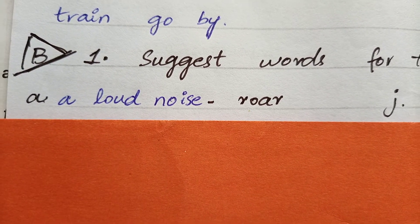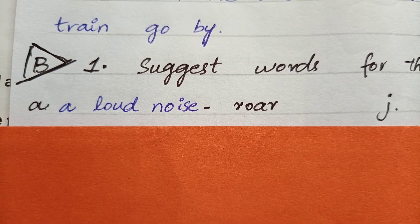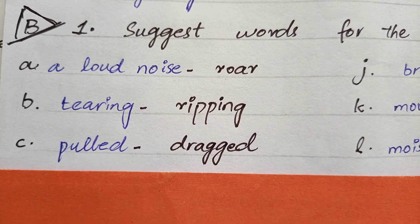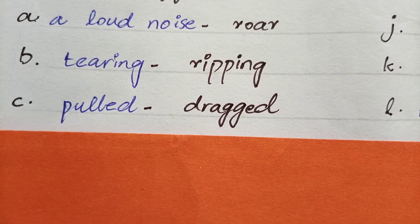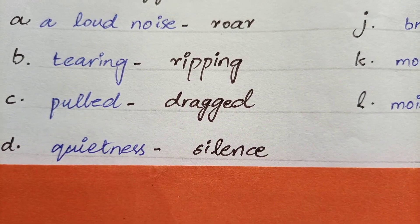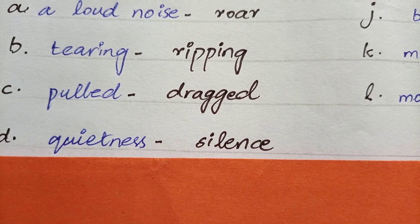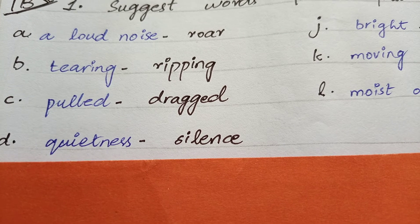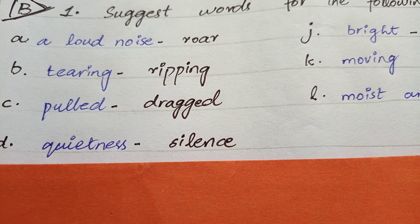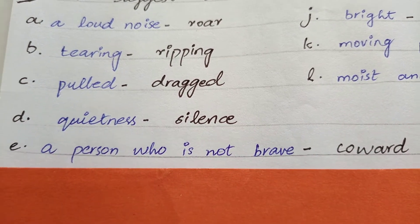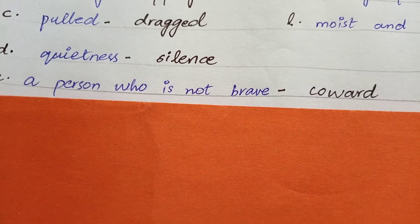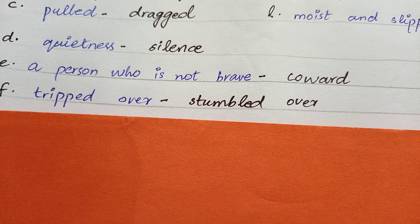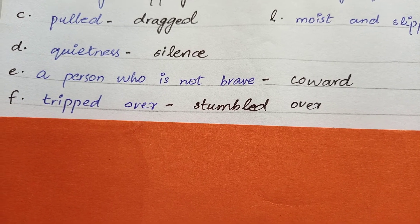The word for 'a loud noise' is roar. 'Tearing' — توڑنا یا پھاڑنا — is ripping. 'Pulled' — کھینچنا — is dragged. 'Quietness' — خاموشی — is silence. The words written in black are the ones used in the story. 'A person who is not brave' is coward. 'Tripped over' — لڑکھڑا جانا — is stumbled over.